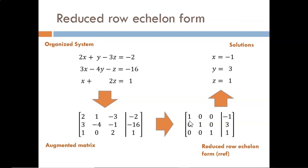The top row is saying that 1 times X plus 0 times Y plus 0 times Z equals negative 1. In other words, X equals negative 1. Similarly, the other rows directly tell us the values of Y and Z.